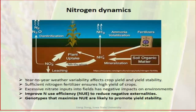We also want to see how plants uptake nitrogen. Year-to-year weather variability affects crop yield and yield stability. Farmers want to apply sufficient fertilizer to ensure high yield, but that causes environmental effects. Plant scientists ask: what if we develop crops with improved nutrient use efficiency—especially nitrogen use efficiency? If nitrogen use efficiency is high, plants don't require as much fertilizer, reducing negative externalities. Genotypes that maximize nitrogen use efficiency are also likely to promote yield stability.